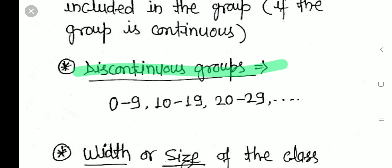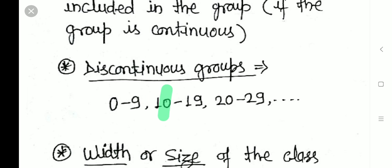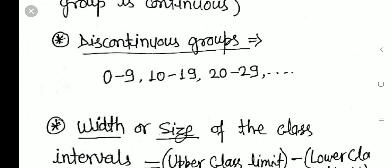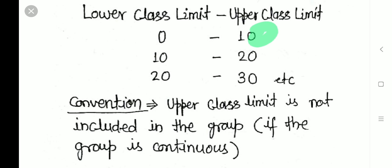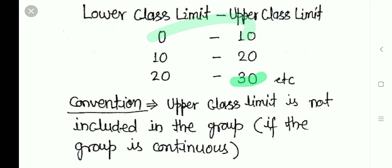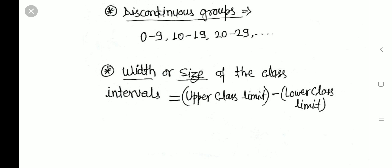Discontinuous groups look like 0–9, 10–19, 20–29, 30–39, and so on. Here the upper limit and the lower limit of the next group are not the same — there is a gap. Such groups are called discontinuous groups. The width or size of a class interval is: upper class limit minus lower class limit. For example, 10 − 0 = 10, 20 − 10 = 10, 30 − 20 = 10. So the class width is 10.